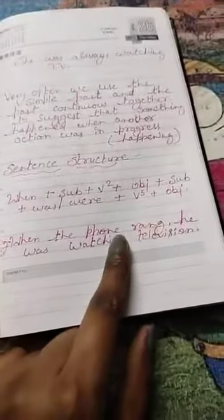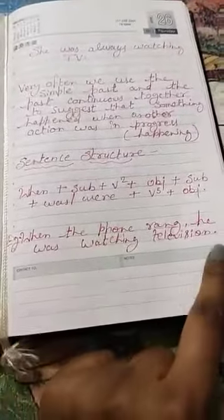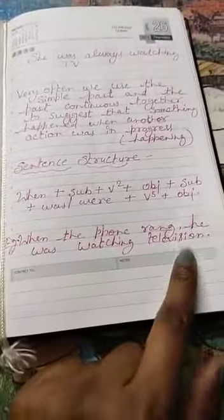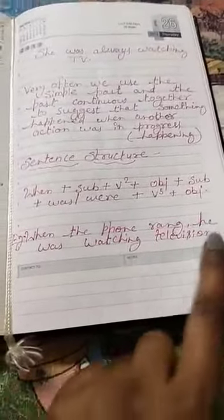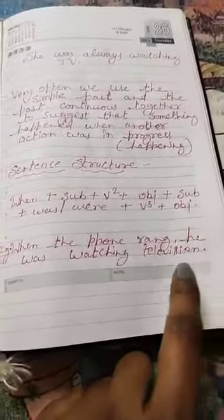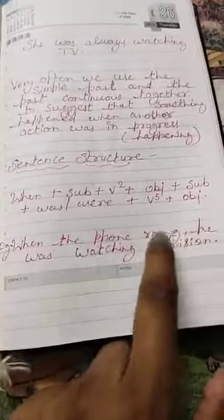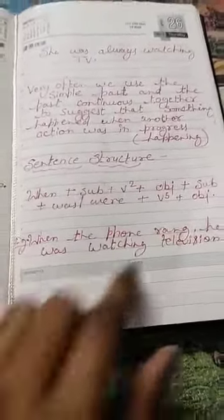For example: when the phone rang, he was watching television. So when this action was in progress — he was watching television — what happened? The phone rang.